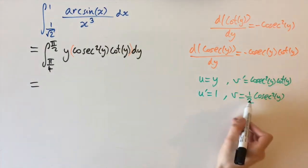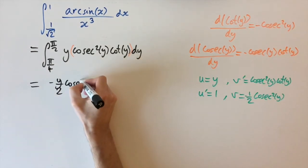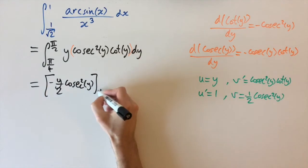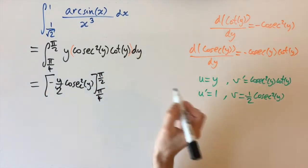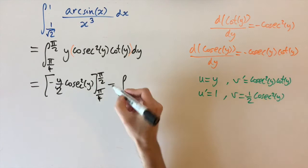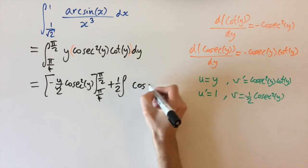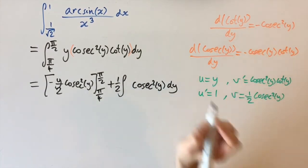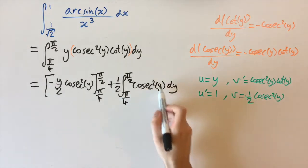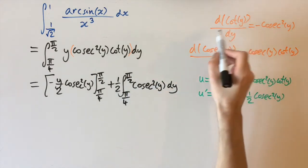Applying the integration by parts formula gives the cross term u times v: minus y over 2 times cosec squared(y), evaluated from pi over 4 to pi over 2. Then minus the integral of u' times v: bringing out minus 1/2 gives plus 1/2 times the integral of cosec squared(y) dy, with the same limits. Cosec squared integrates to minus cot(y) using our earlier result.